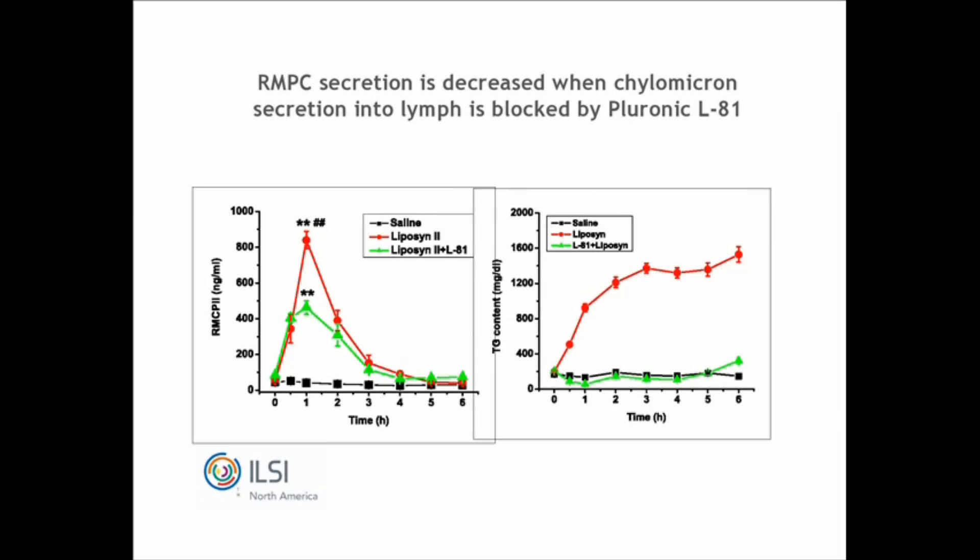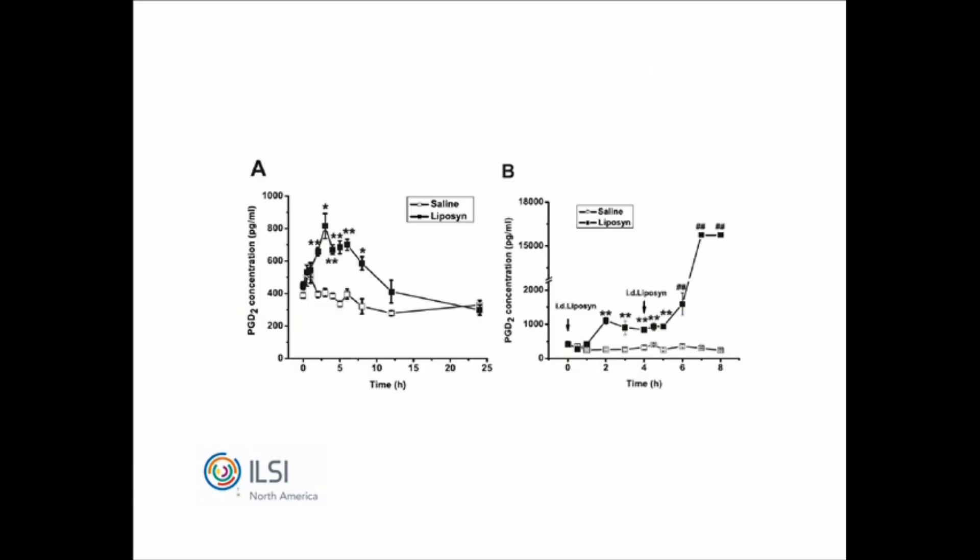They are continuing to follow this up. Prostaglandin D2 (PGD2) secretion into lymph with Lipicyn versus saline followed a similar pattern. Interestingly, if a second dose of Lipicyn is given about four hours after the first infusion, there is a second considerable spike in prostaglandin release. The physiological consequences of this are not clear. But the idea that different types of fatty acids have an effect on this process is worth continuing to investigate.